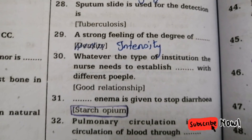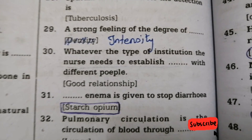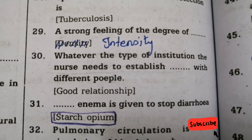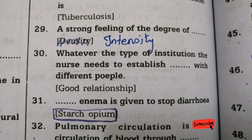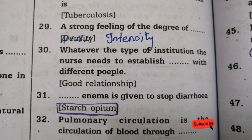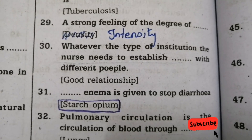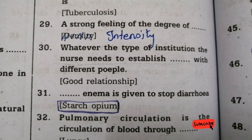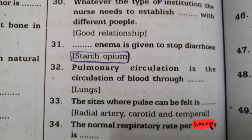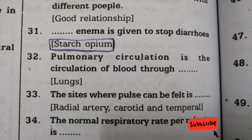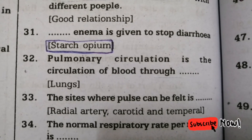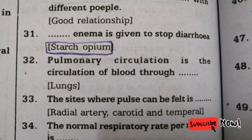Next: a strong feeling of the degree — answer is intensity. Next question: whatever the type of institution, the nurse needs to establish — answer is a good relationship with different people. Thirty-first question: which enema is given to stop diarrhea? Right answer is starch opium. Thirty-second question: pulmonary circulation is the circulation of blood through — answer is lungs.